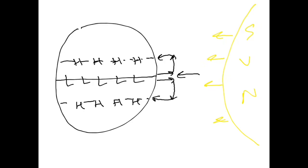Air at the surface flows from high pressure to low pressure, and that's why we have winds. In the northern hemisphere, the air gets veered toward the right of initial motion because of the Coriolis effect. In the southern hemisphere, the air gets veered toward the left. These winds are called the easterly trade winds because they originate in the east and go toward the west.